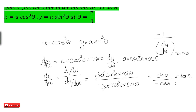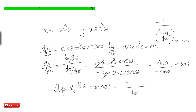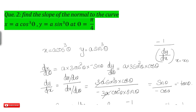The slope of the normal is minus 1 divided by the slope of the tangent, that is minus 1 by dy by dx at x equal to x₀. At theta equal to pi by 4, this is minus 1 divided by minus tan(pi by 4), which equals minus 1 divided by minus 1, giving slope of the normal equal to 1.